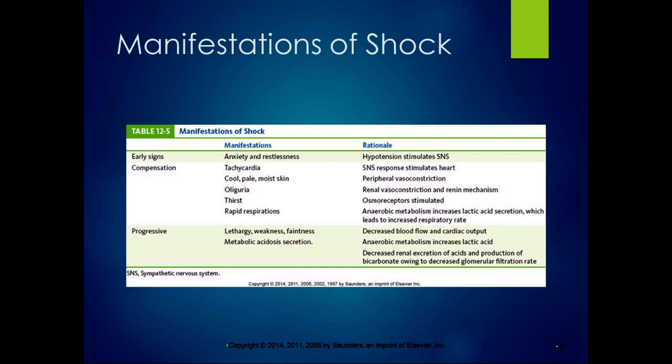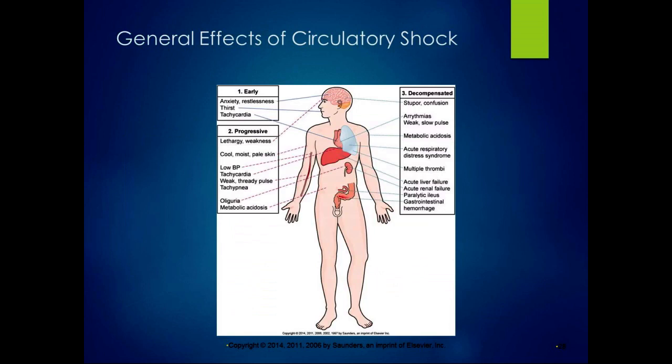Early signs include anxiety and restlessness due to stimulated sympathetic nervous system, compensated with elevated heart rate and tachycardia, cool, pale, moist skin, oliguria due to renal vasoconstriction from increased renin secretion, thirst as your body tries to stimulate fluid replenishment, and rapid respiration. Progressive shock brings lethargy, weakness, fainting, and metabolic acidosis — lots of effects to different organ systems in the body.